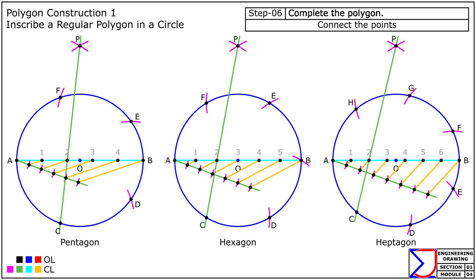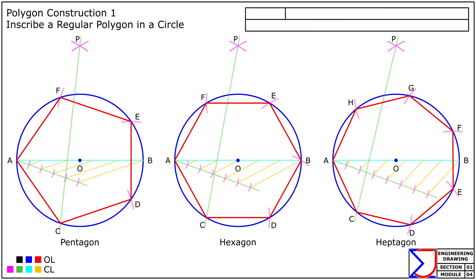Finally, connect the points C, D, E, and so on to complete the required polygon. This method provides a straightforward and accurate way to inscribe a regular polygon within a circle. The equal division ensures consistent side lengths, making this technique both reliable and efficient for precise construction.